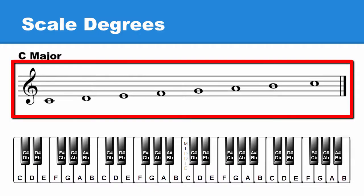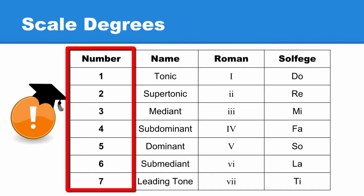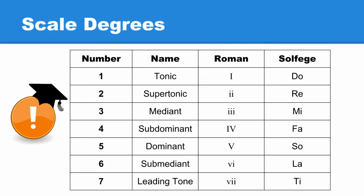Every note in the major scale has a unique scale degree. There are a few ways to label scale degrees: by number, name, Roman numeral, and something called solfege.